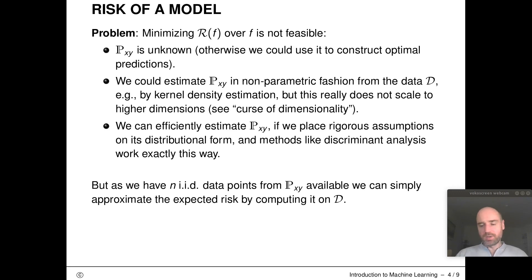The problem is we can't do that in practice. That's not really feasible because capital P, this data generating process, is unknown. We have only samples available from it but we don't know its functional form or distribution class. If we knew it we could use it to construct optimal predictions.